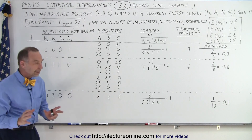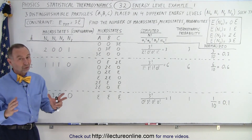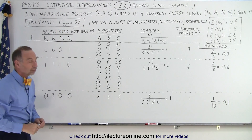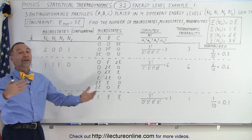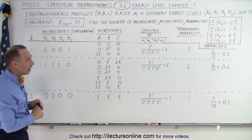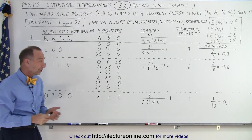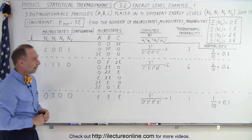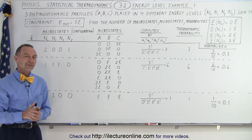So you can see that the way we calculate macrostates and microstates works just as well — and beautifully so — when we have different energy levels under a specific constraint. We can then expand that to almost an infinite number of combinations and probabilities. We'll see more examples of this with different constraints to see how it's done when we include energy levels.